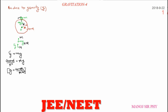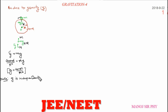Acceleration due to gravity depends only on the mass of the Earth (or planet), the radius, and the gravitational constant G. An important note: acceleration due to gravity is independent of the mass of the object.